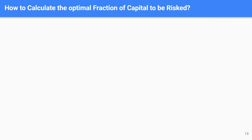Now that you understand the importance of Risk of Ruin, it's time to go deeper and talk about the important components. One of the most important is the percentage of capital to risk in each trade. The question is: how many percent should be risked per trade? It depends on different factors such as your personality — are you a risk-averse type of person or a risk-tolerant type of person?